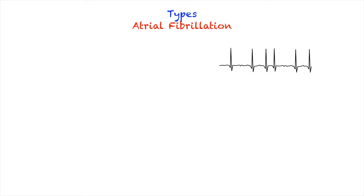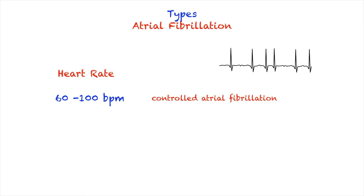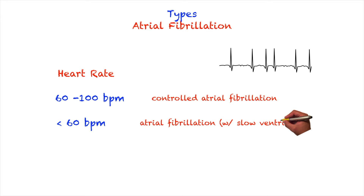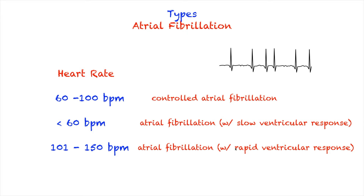There are different types of atrial fibrillation, and usually these types are determined by their heart rate. If the heart rate is between 60 to 100 beats per minute, this is called controlled AFib. If the heart rate is less than 60 beats per minute, it is called AFib with slow ventricular response. If the heart rate is between 101 to 150 beats per minute, it is called AFib with RVR — rapid ventricular response. And if the heart rate is more than 150 beats per minute, this is called uncontrolled AFib.